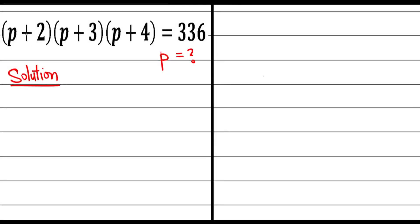Solving this type of question: p plus 2 multiplied by p plus 3 multiplied by p plus 4 equals 336, then we have to find the value of p.